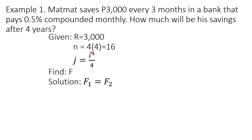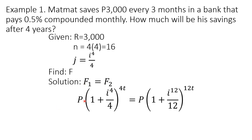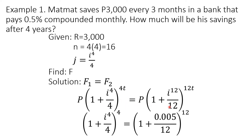First, we solve for the value of J. We set F sub 1 equal to F sub 2. The formula for F sub 1 is P times 1 plus interest over 4, raised to 4T, equals F sub 2 which is P times 1 plus the interest per month raised to 12T. By dividing both sides by P, P cancels out on both sides.